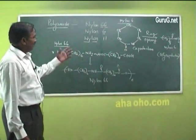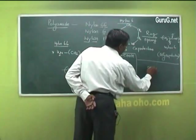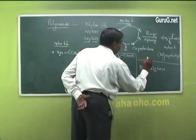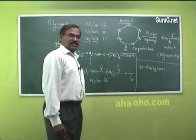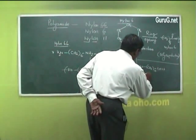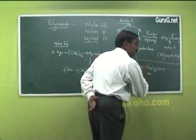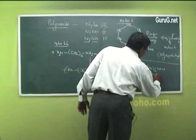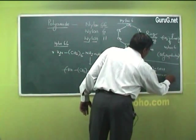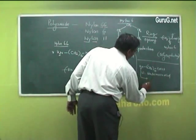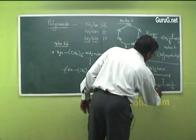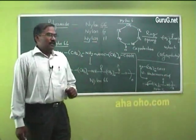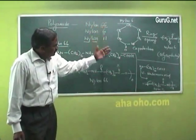The ring-opening of caprolactam gives Nylon-6, otherwise called polycaprolactam. The third is Nylon-11. Here again we are not taking two different monomers; we take only one monomer where one side has an acid group and the other side has an amino group — both present in the same monomer. It is omega-amino undecanoic acid, having 11 carbon atoms. On polymerization it gives the polymer Nylon-11. These are the three polyamides: Nylon-66, Nylon-6, and Nylon-11.